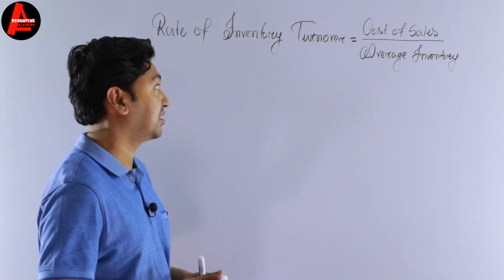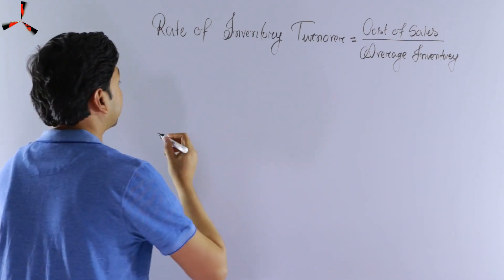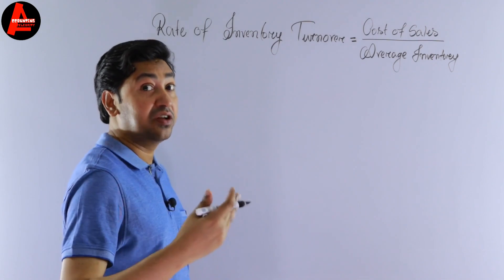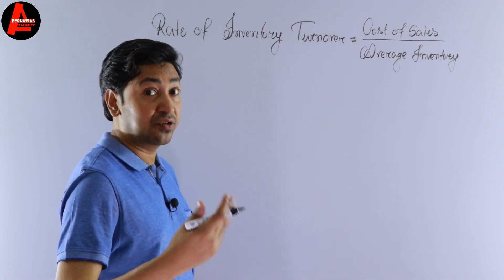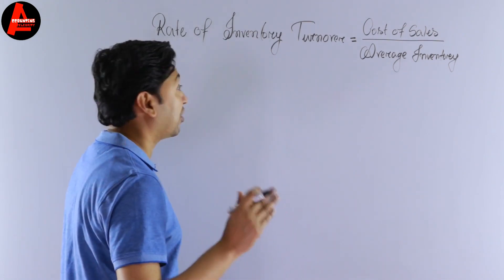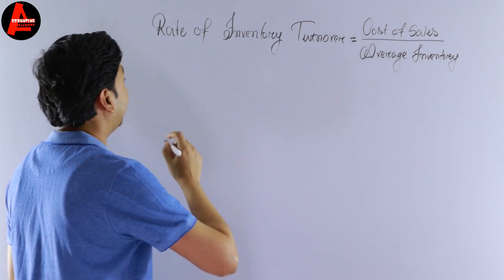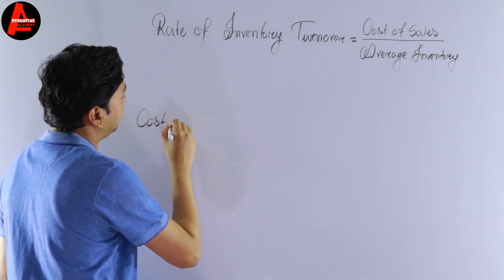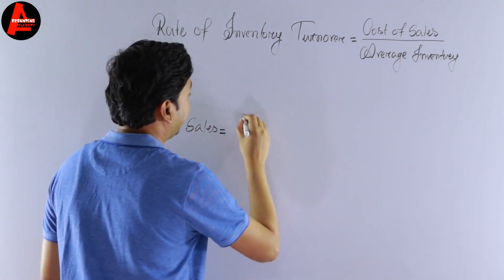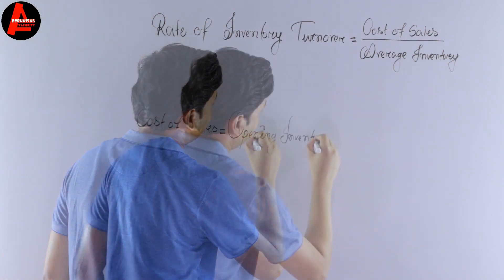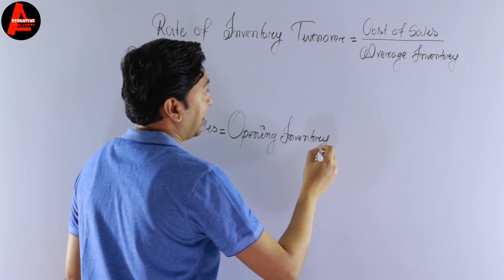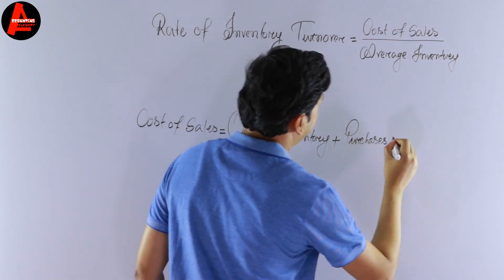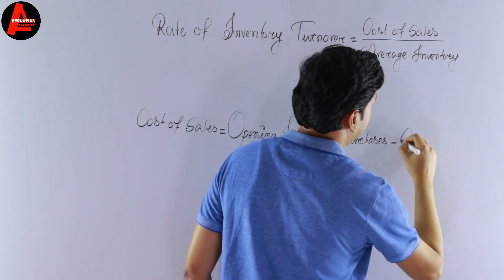How to calculate cost of sales? Note that another term for cost of sales is cost of goods sold — same thing, don't be confused. Cost of sales equals opening inventory plus purchases minus closing inventory.